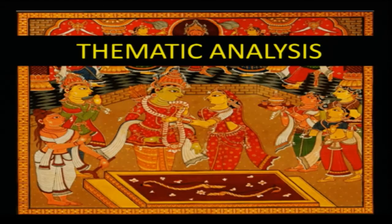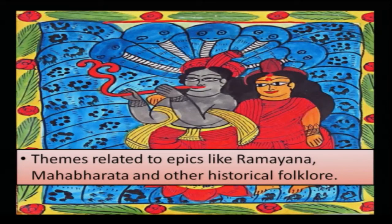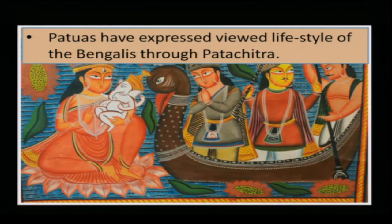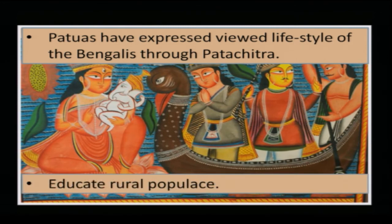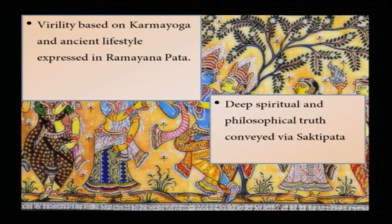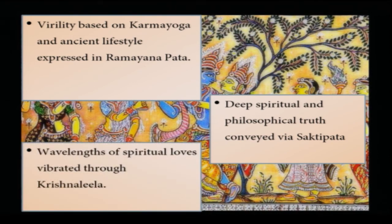In the thematic analysis, the Bengal Potha Chitra tradition has been ongoing for ages, with themes mostly related to epics like the Mahabharata, Ramayana, and other historical folklore. They convey historical facts and emphasize human civilization and culture. The Patuas have expressed the lifestyle of Bengalis and the life of the common man through their art. Virility based on Karma Yoga is expressed in the Ramayana Potha; deep spiritual and philosophical truth is conveyed via Shakti Potha; and spiritual love is expressed through the Krishna Leela.